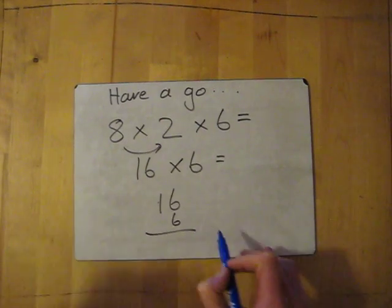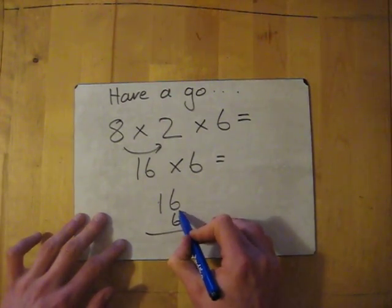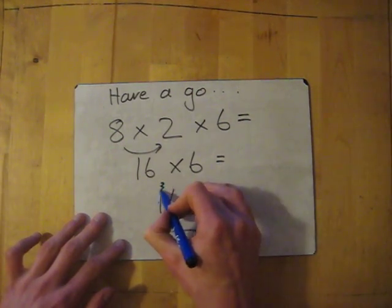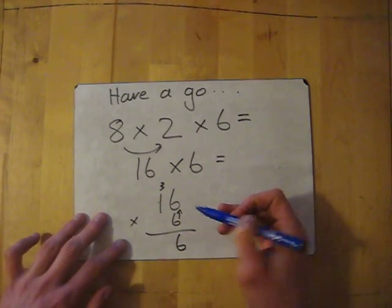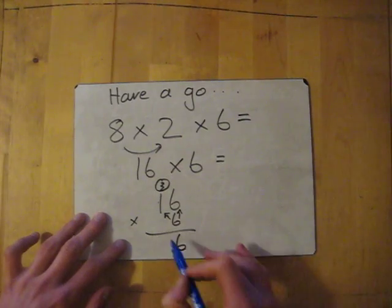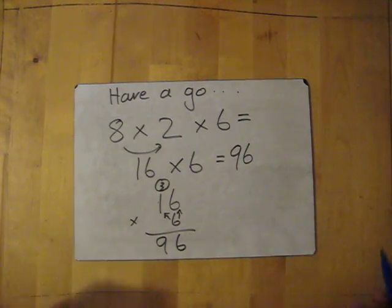Now I'm going to do the long multiplication way just to make sure I'm doing it right. So 6 times 6 is 36, so write down the 6, carry the 3. Then 6 times 1 gives me 6, and then add the 3 gives me 9. So it's 96. There you have it.